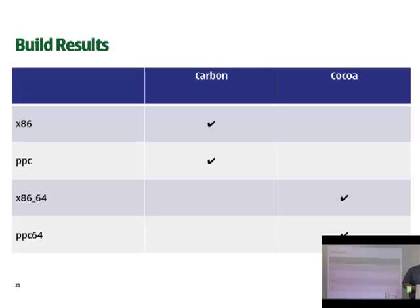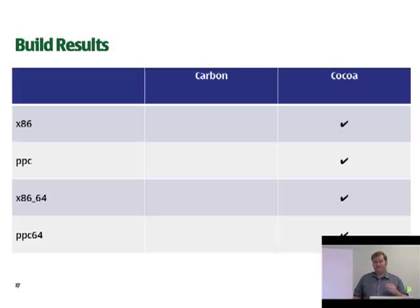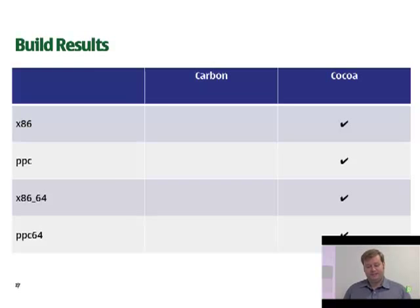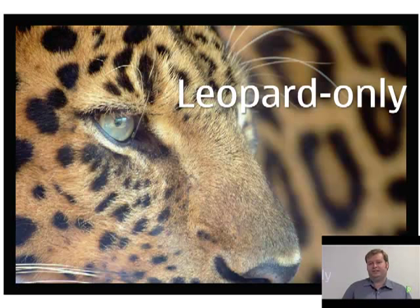Some of you might feel that you really want everything to be pure Cocoa. You can do that by passing minus-cocoa on the configure line. When you do that, everything will use Cocoa. However, there are some restrictions if you are building everything all Cocoa. One of these restrictions is that it's Leopard-only — it will not work on Mac OS X earlier versions. So if you can require Leopard and above, you should really consider giving Cocoa a shot.